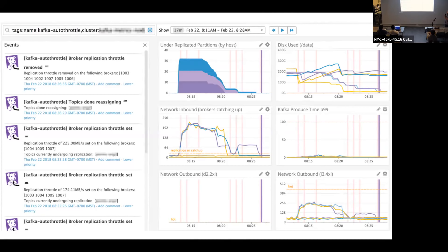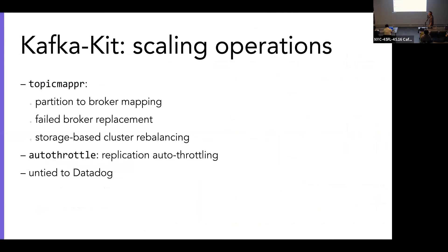What that gives us is we can launch a reassignment operation — which still takes hours — but we can be confident it's going to go well. Whereas in the past we'd be stuck at our computers hoping everything would be okay, and if not, we'd get paged and have to react. These tools are not tied to the DataDog metrics backend; it's open to pull requests and you don't have to be a DataDog customer to use Kafka Kit.